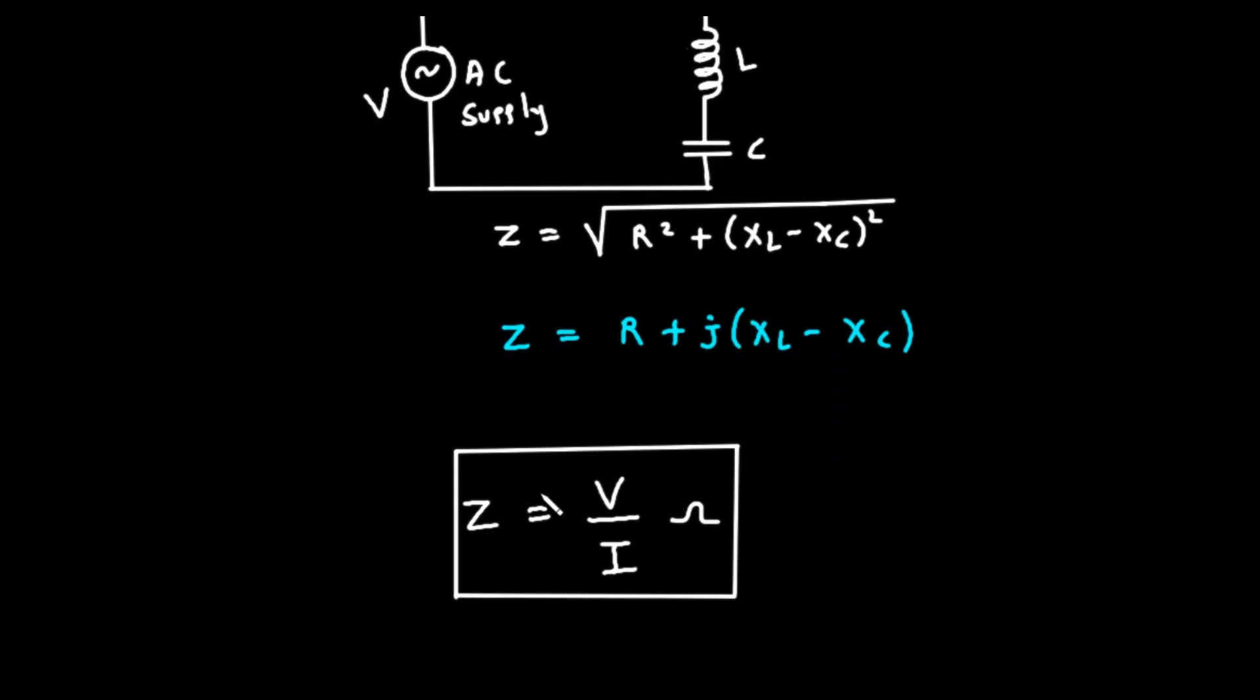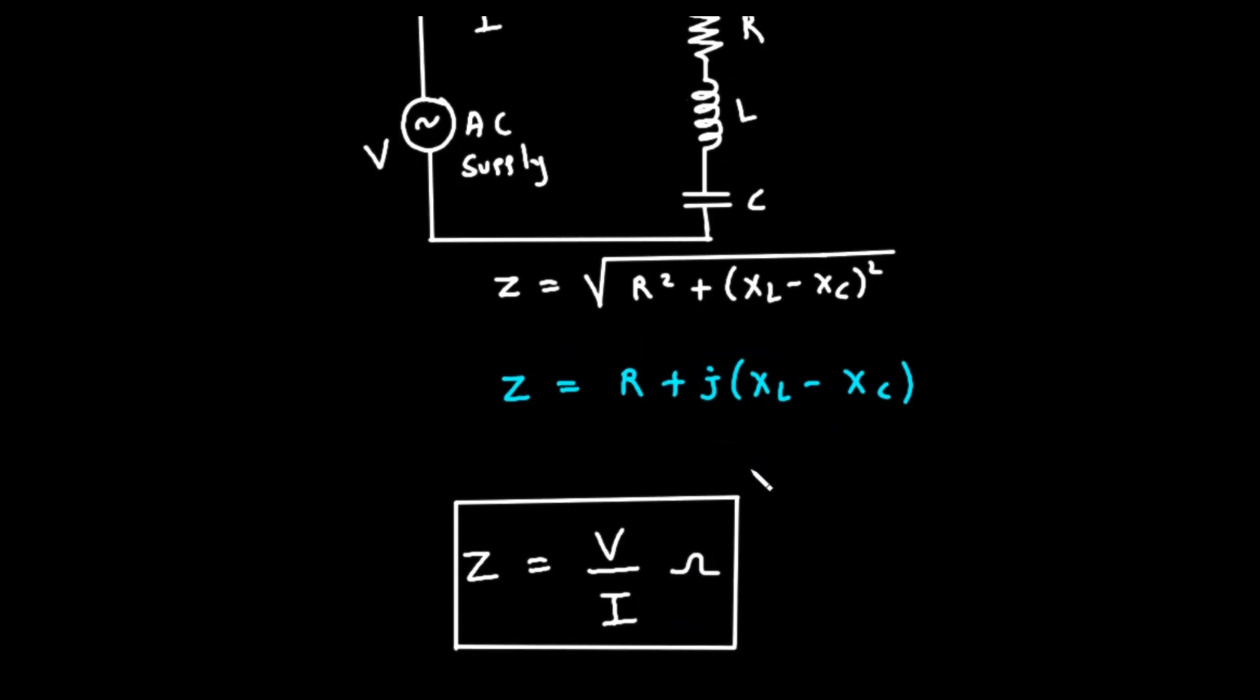This brings us to the final, most important boxed equation at the bottom: Z equals V divided by I. This is Ohm's law for AC circuits. It's a powerful generalization that works for any AC circuit, no matter how complex.